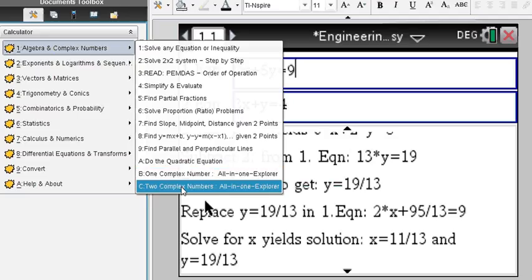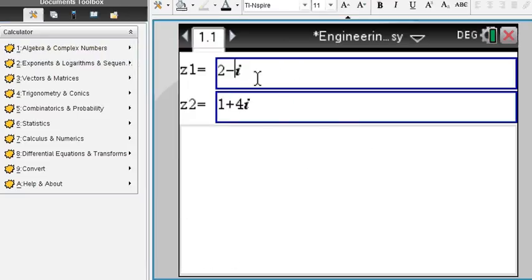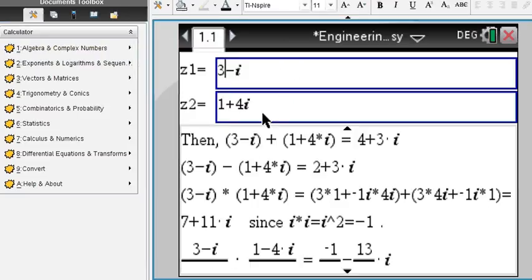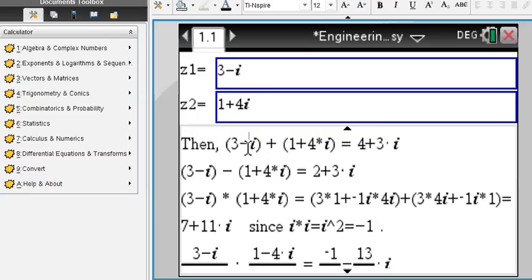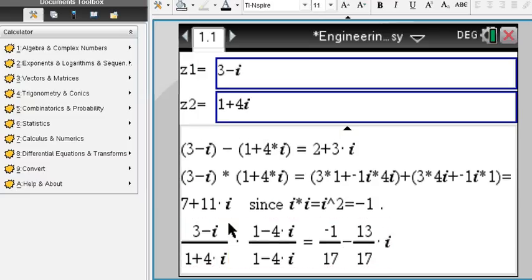Complex numbers. Say you're given two complex numbers and you want to find the sum, the difference, the product, or the quotient, then that's all done here for you, step by step.